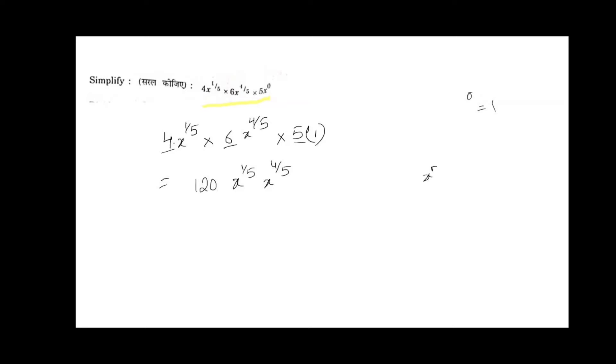As per the formula x power m into x power n equals x power m plus n. 1 by 5 and 4 by 5 are like fractions. So we can add the numerators: 4 plus 1 gives 5, and by 5. Both are cancelled. So 120x is the answer.